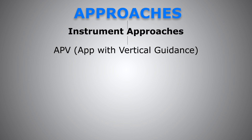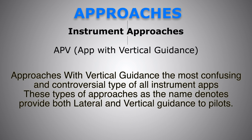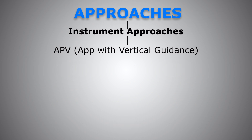Now let's look at APV — approaches with vertical guidance — the most confusing and controversial type of all instrument approaches, especially these days when fancy names like PBN, RNAV, and RNP get thrown around and some of us have a hard time understanding all of them. These types of approaches, as the name denotes, provide both lateral and vertical guidance to pilots. Now, if so, why aren't they just categorized as precision approaches? The answer is that they do not conform with ICAO standards of precision approaches. Since they aren't precise enough to be considered precision, and are precise enough not to be degraded as non-precision, a new category was created that falls in between — called APV.